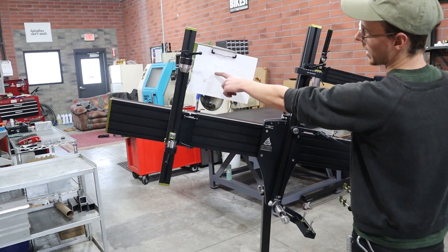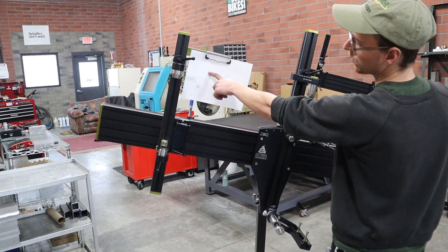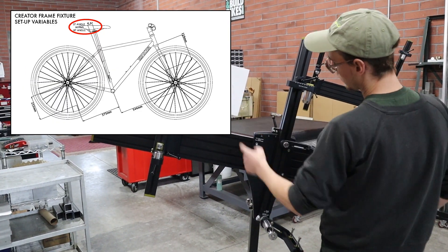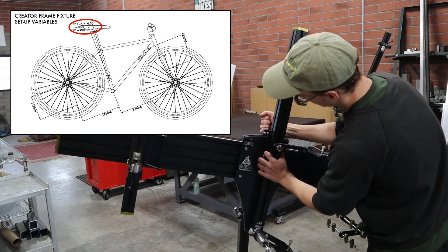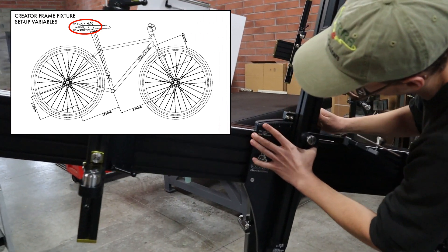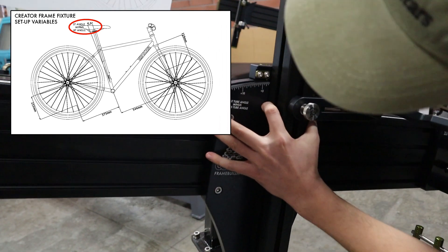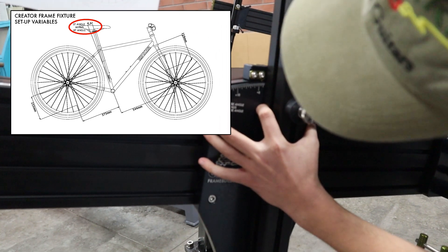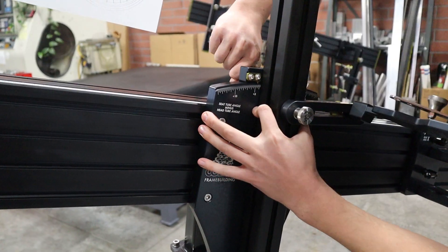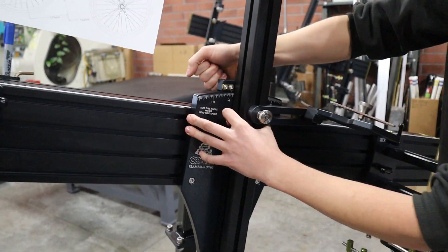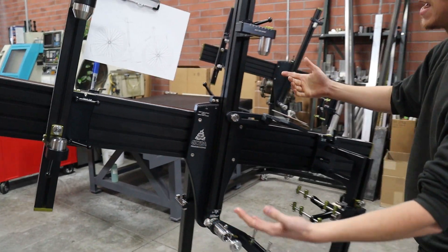The seat tube to head tube angle difference is positive four and a half degrees. I'm just going to move this to where the pointer reads positive four and a half degrees.